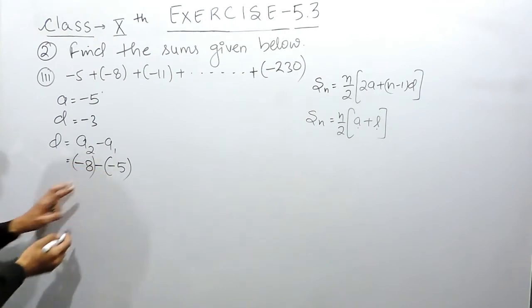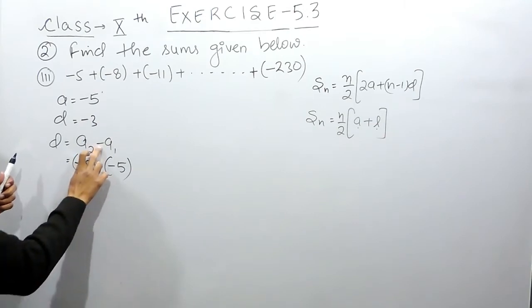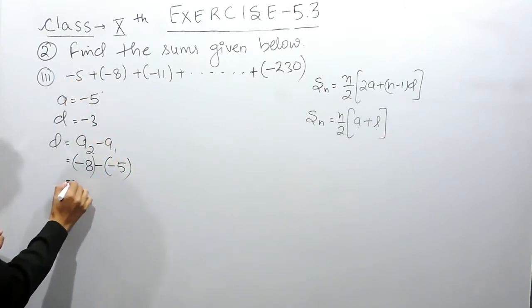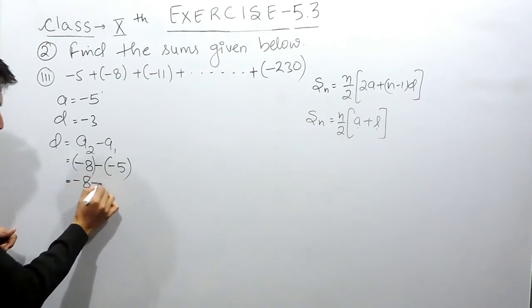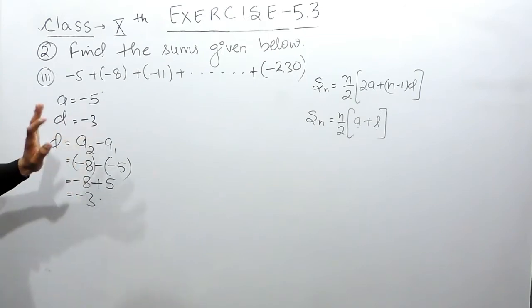So this is the first term... sorry, this is the second term, -8. So solving this: -8 minus (-5). Minus minus will be plus, so this will be -3. So here the common difference is -3.